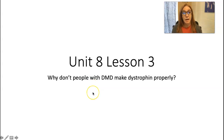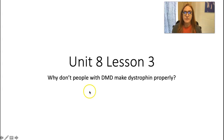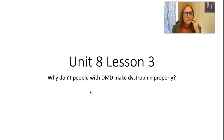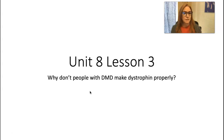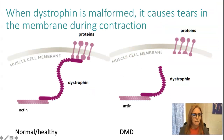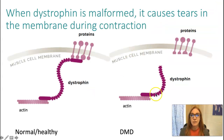Today we're going to continue talking about investigating the causes of Duchenne muscular dystrophy. We're going to talk about the first part — why don't people with DMD make the protein dystrophin? Last time we were in class, the last thing we talked about was how dystrophin works. What is dystrophin?